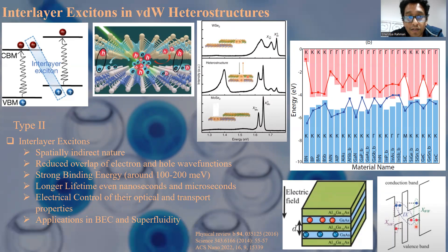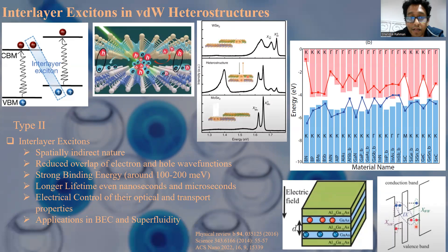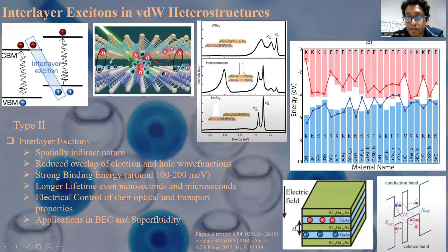In two-dimensional materials, the indirect nature of the interlayer excitons allows overlap of electron and hole wave functions. As a result, interlayer excitons in 2D materials have very strong binding energies, around 100 to 200 milli-electron volts, and can exist at room temperature. They also have very long lifetimes, usually in the range of nanoseconds to microseconds. For example, in a heterostructure formed between WS2 and MoS2, an interlayer exciton occurs at lower energy, and the bidirectional nature of the system is evident.